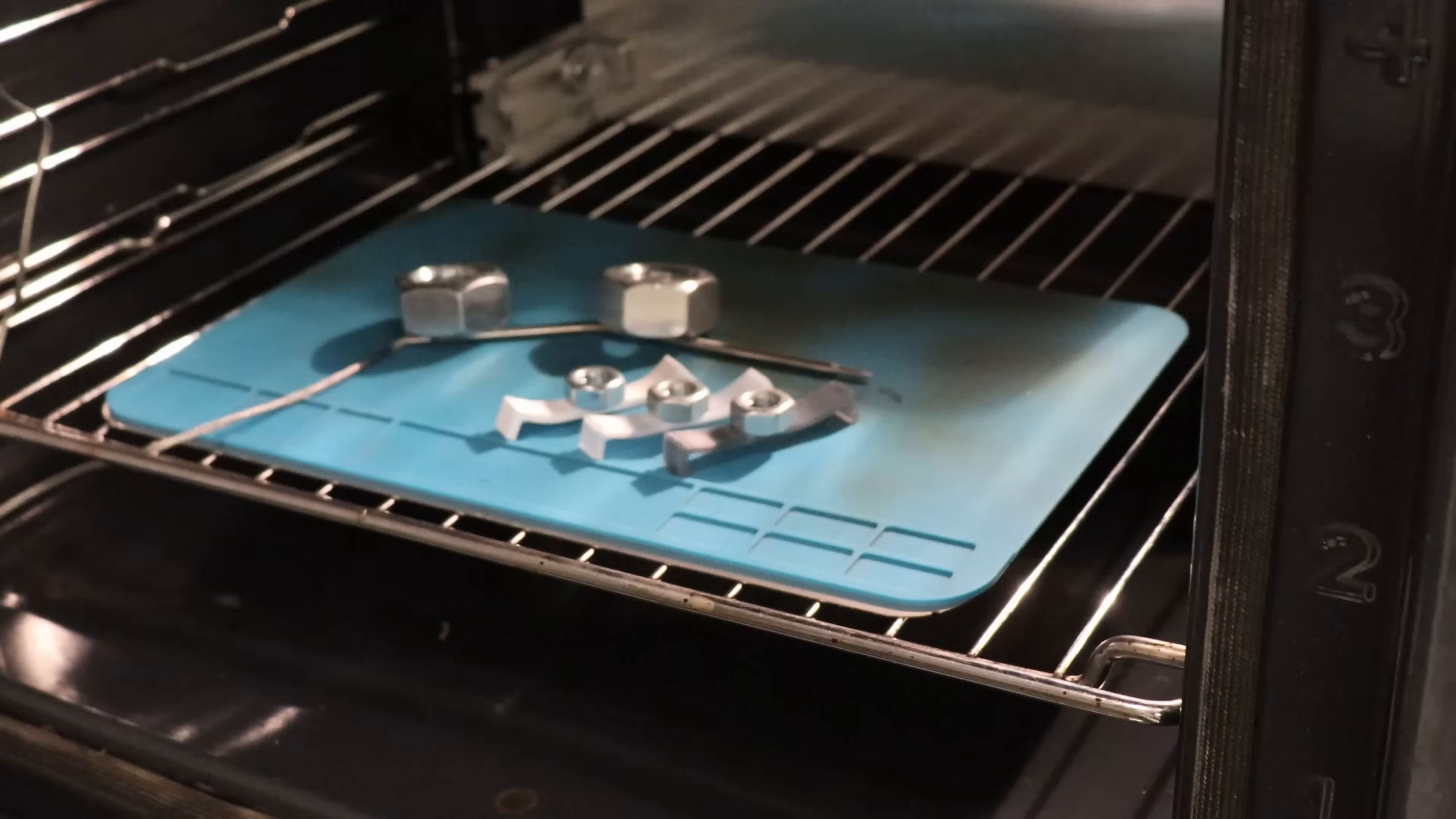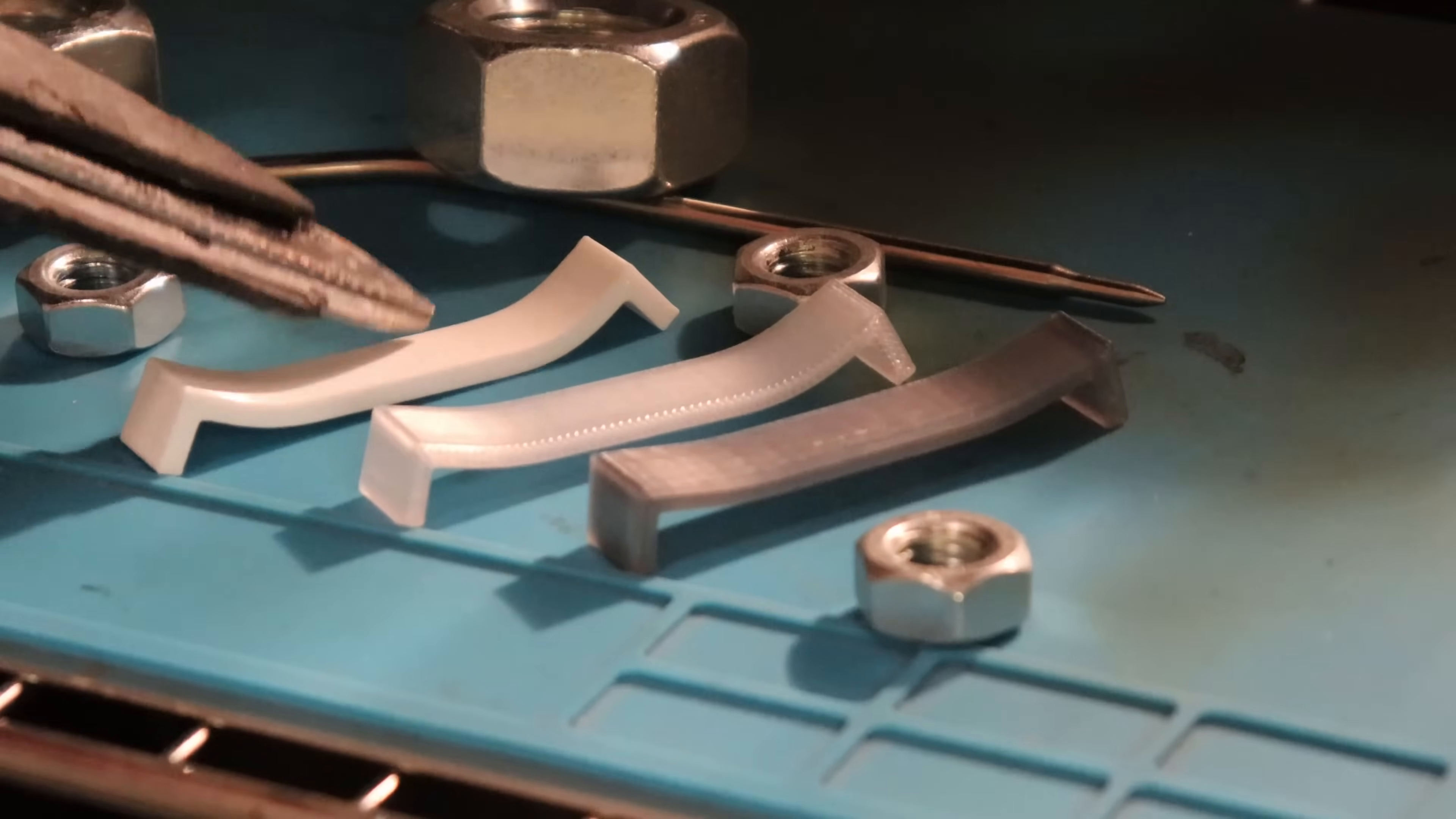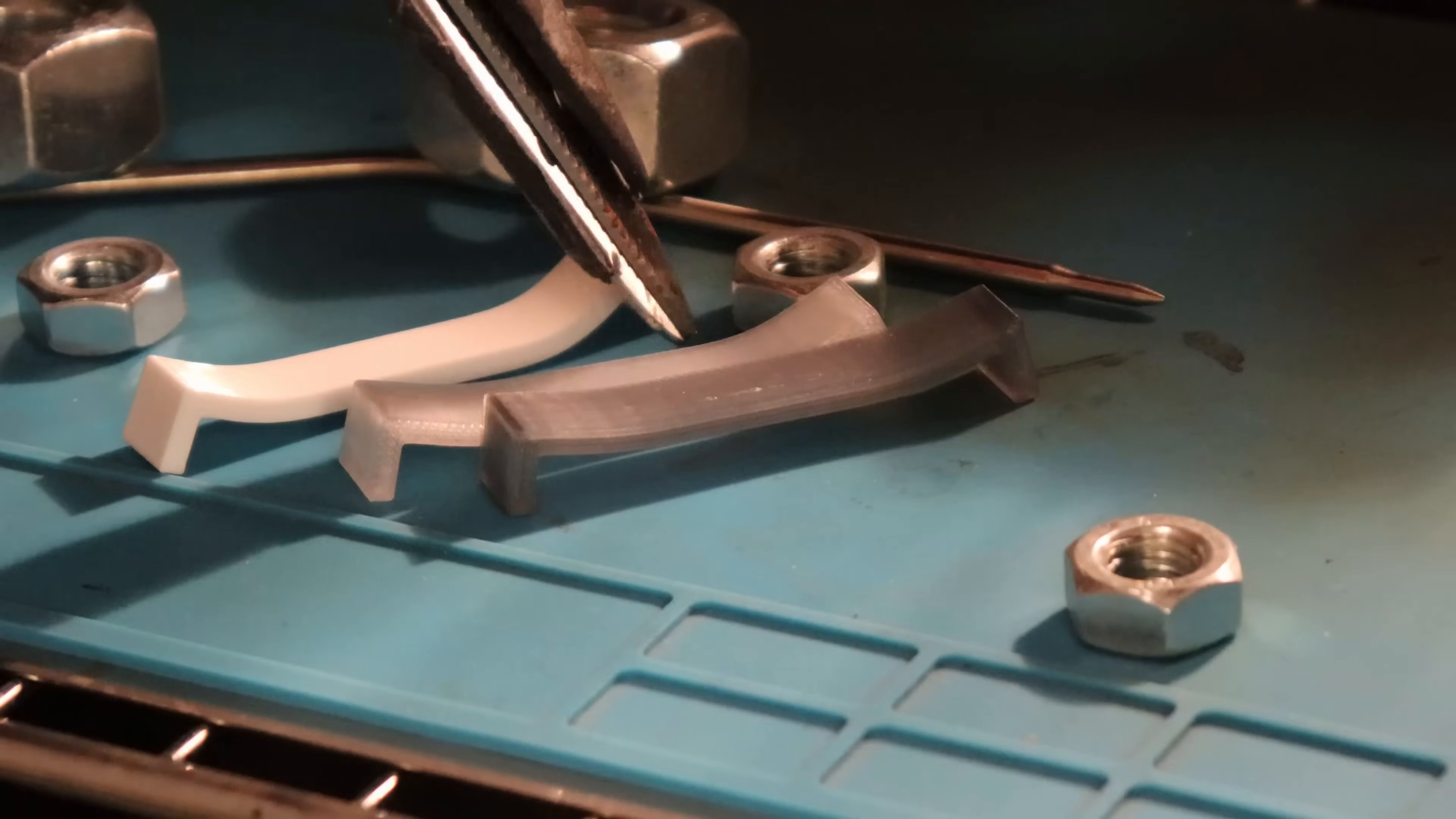And now let's analyze the objects. I just removed the load but even now I can see the difference in the deformation. So the white is the worst and the black is the best.